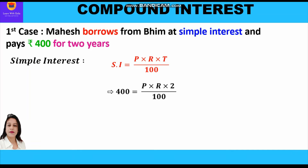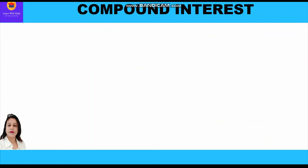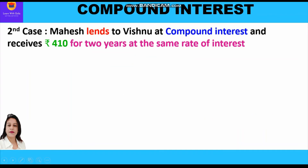Interest is 400, so: 400 = P × R × 2 / 100. Cross multiplying, PR = (400 × 100) / 2 = 20,000. Therefore, principal × rate of interest = rupees 20,000. This is our first equation from Case 1.